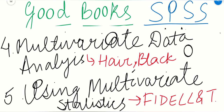I will also provide the links from where you can download these books online in the description box, so either you can download the e-books and study, or these are easily available at the bookstore. The five books I have discussed for SPSS are: Advanced Quantitative Data Analysis, SPSS Survival Manual, Quantitative and Statistical Research Methods, Multivariate Data Analysis, and Using Multivariate Statistics.